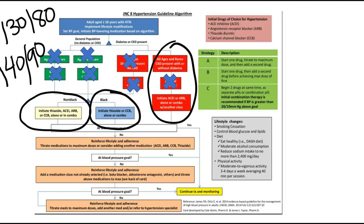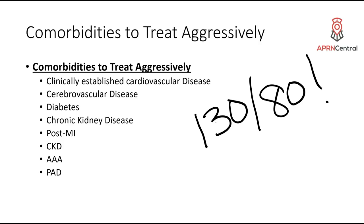The difference in treatment comes down to comorbidities and populations. There are three groups: non-black, black, and chronic kidney disease. For the general population it was 140 over 90; with the new guidelines it's 130 over 80, especially if they have comorbidities. Patients with documented cardiovascular disease, stroke, diabetes, chronic kidney disease, MI, abdominal aortic aneurysm, or peripheral artery disease — you want to be a little more aggressive. With PAD, one thing you can do is the ABI and bill for that in the office.